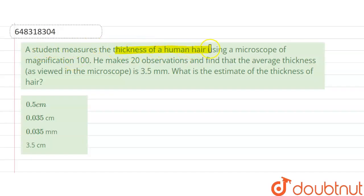A student measures the thickness of human hair using a microscope of magnification 100. He makes 20 observations and finds that the average thickness as viewed in the microscope is 3.5 millimeter. What is the estimate of the thickness of hair?